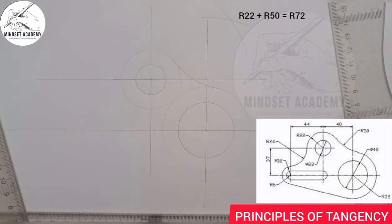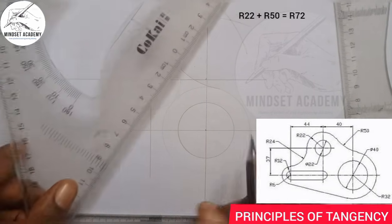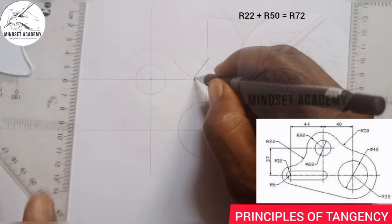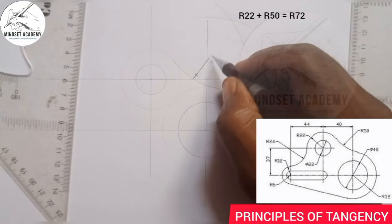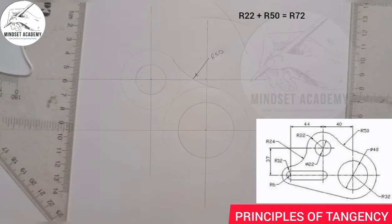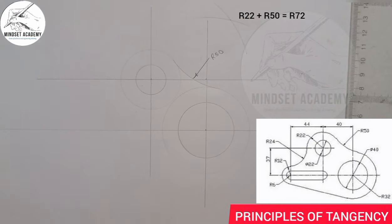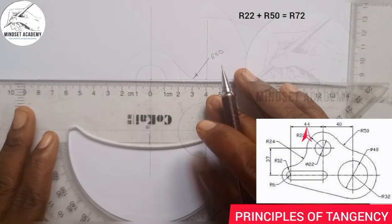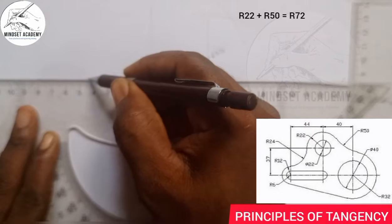Now I'll come back to it and move to the next center. The radius here from the circle is giving us 50. Moving forward to the next center, I'm going to measure 44 away from that center — from here, 44: from 0, that's 40 and that's 44.